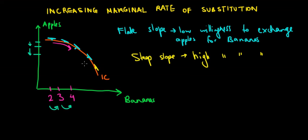So if we have a lot of bananas, we want even more of them. So we're going to give up even more apples than we used to. The slope, the willingness to exchange, is becoming higher and higher as we increase our consumption of bananas. Hope this makes sense and we are done.